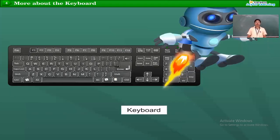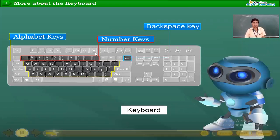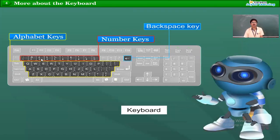On the keyboard there are number keys and alphabet keys, and a backspace key. The number keys — 1, 2, up to 9 and 0 — are available at the top. On the right-hand side of the keyboard, number keys 1 through 6 are also available. So number keys are available in two places. Now this is the character keys.